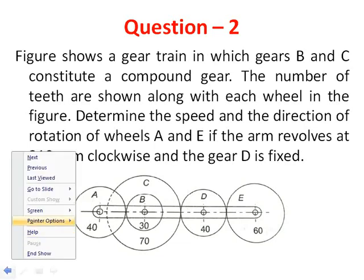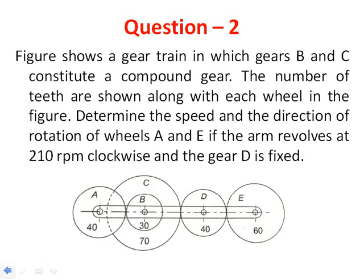In this video we have gears A, B, C, D, and E. The number of teeth on each gear are: 40 teeth on gear A, 30 on gear B, 70 on gear C, 40 on gear D, and 60 on gear E.